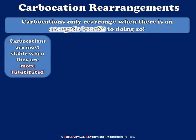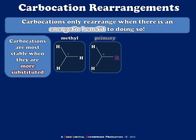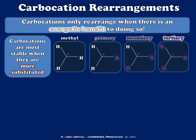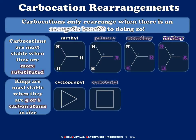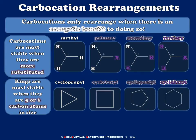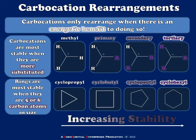The first is the substitution level. Methyl is a very unstable carbocation, while primary carbocations are only slightly more stable. Secondary and tertiary carbocations are what we tend to see forming most commonly in first-order reactions, with tertiary being the best. Also, rings are most stable when they have five or six carbon atoms, so cyclopropyl and cyclobutyl configurations contain a great deal of ring strain. If they can relieve it by rearranging to become cyclopentyl or even cyclohexyl groups, they will. Stability increases as we move to the right on this diagram.